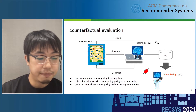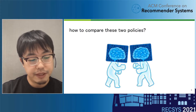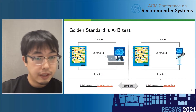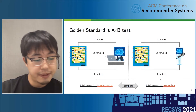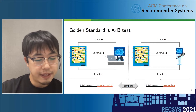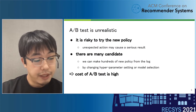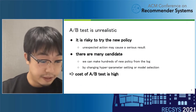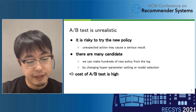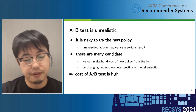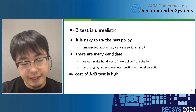So we want to evaluate a new policy before implementation. The problem is how to compare two policies. The golden standard of evaluation is A/B testing — for example, we randomly separate users into two groups, use the logging policy for one group and the new policy for the other, then compare the average reward. But A/B testing is still unrealistic because we need to implement a policy on the production environment. Also, there are many candidates to evaluate, since we can make hundreds of different policies by changing the model selection or hyperparameter setting. That is why off-policy evaluation (OPE) is getting a lot of attention.